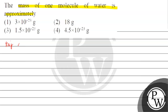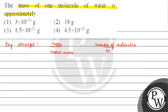The key concept for this question is: mass of compound divided by molar mass of compound equals number of molecules divided by Avogadro's number. Now we need to find the mass of one molecule of water.